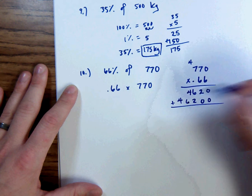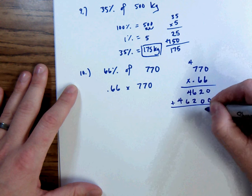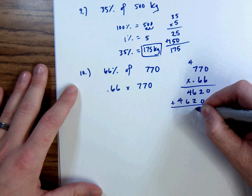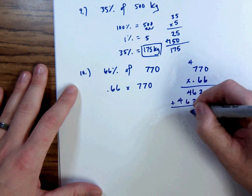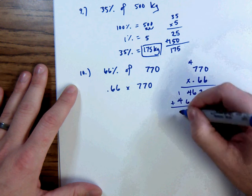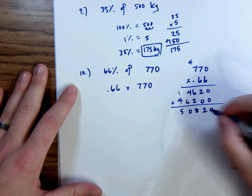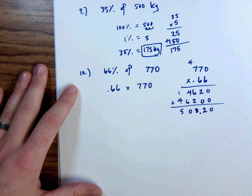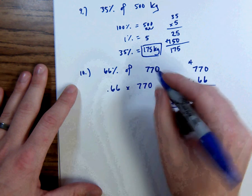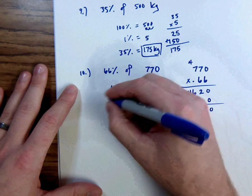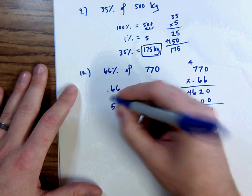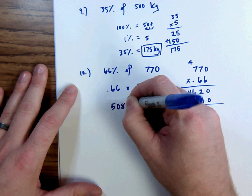Add everything up. I get 0, 2, 8. That's a 10. So 0, carry the 1. And 5. There's two numbers behind the decimal. So there needs to be two numbers behind the decimal in my answer. So 66% of 770 is $508.20.